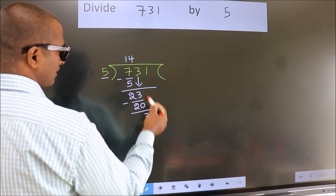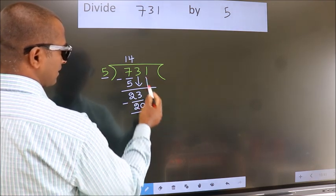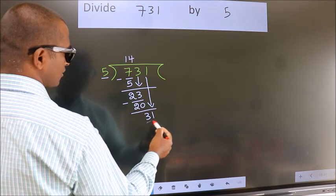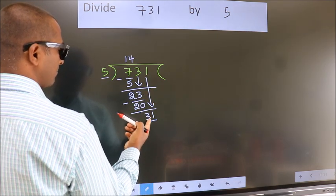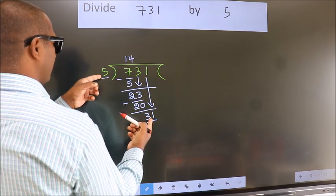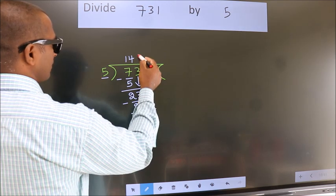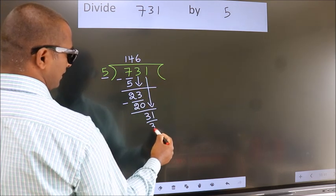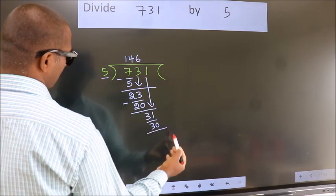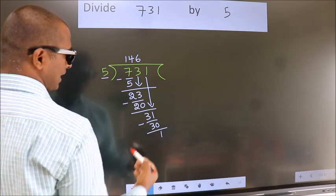After this, bring down the next number. So, 1 down. 31. A number close to 31 in the 5 table is 5 sixes is 30. Now, we subtract. We get 1.